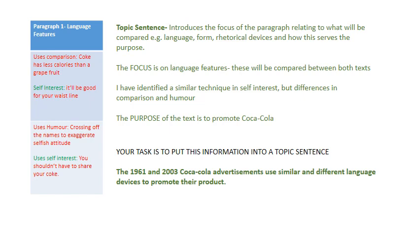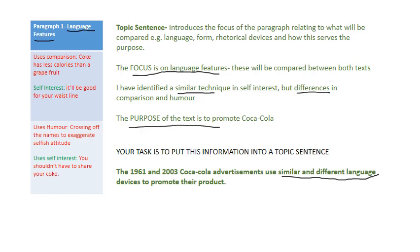Here's my example: 'The 1961 and 2003 Coca-Cola advertisements use similar and different language devices to promote their products.' Notice I didn't go into too much detail. The focus was on language features — I identified that. I made the point that there were similar techniques but also different techniques. I outlined that without going too specific. The purpose of the text was to promote the product of Coca-Cola. It's a fairly simple sentence, but it clearly outlines everything I was attempting to do.